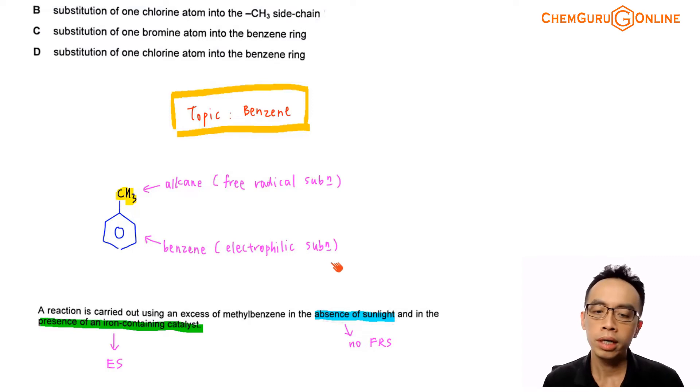Now given the conditions, the question mentioned that I have a reaction carried out using excess of methylbenzene in the absence of sunlight. So in the absence of sunlight means that there will not be any UV-light source to break our halogen-halogen bond homolytically. And therefore we will not generate any radicals. And if there are no radicals generated, there wouldn't be any free radical substitution. So this means that we can eliminate the possibility for free radical substitution of alkane.